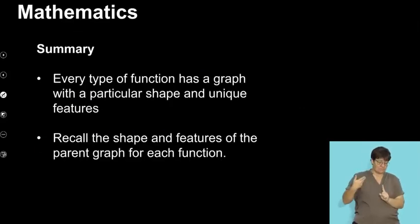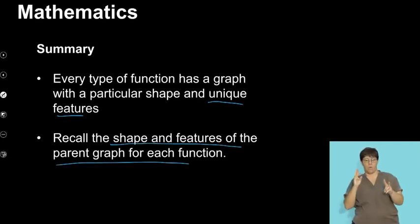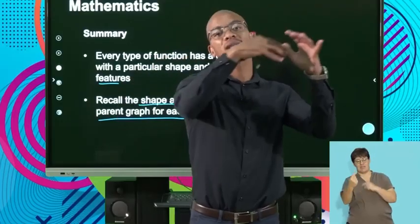Now, just to summarize what we've looked at, remember, every type of function has its own graph with a particular shape and unique features. Some have two asymptotes, some have one, some have a turning point, some do not have a turning point. And then you need to look at the shape and the features of the parent graph and see how it moves and becomes the other functions.